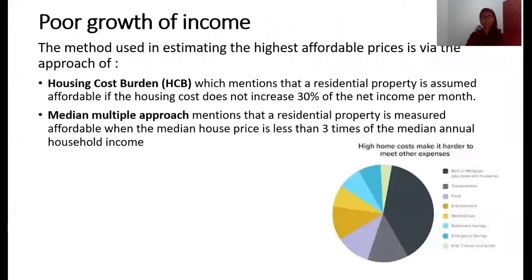Another reason that causes house prices to increase beyond affordability is due to the poor growth of income. There are two methods used in estimating the highest affordable prices: the housing cost burden approach and the median multiple approach. In the housing cost burden approach, a residential property is assumed affordable if the housing cost does not exceed 30% of net income per month. In the median multiple approach, a property is affordable when the median house price is less than three times the median annual household income.